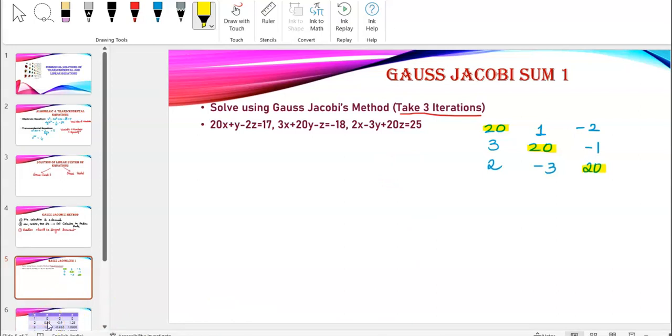Now, once the diagonal dominant form is clear, we don't require the matrix here. So, I'm going to erase that matrix part. Once the diagonal dominant part is clear, let's understand how to solve using Gauss-Jacobi's method.